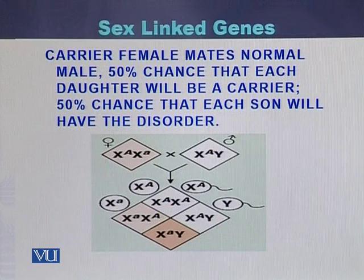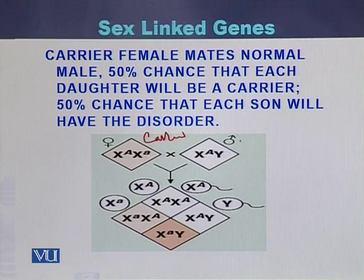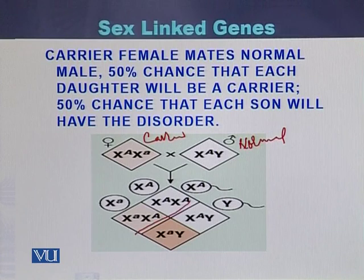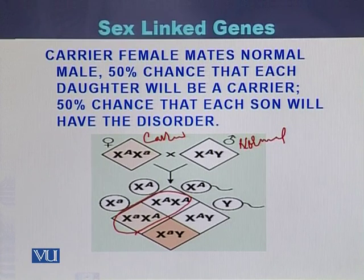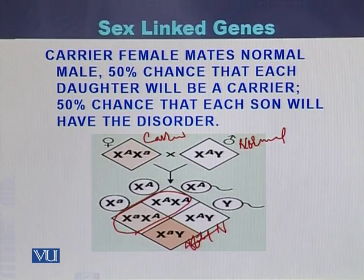In another example, a carrier female mates with a normal male. As a result of this cross, there will be a 50 percent chance that each daughter will be a carrier, and a 50 percent chance that each son will carry the disease. So in a cross where the female is a carrier and the male is normal, 50 percent of daughters will be carriers while 50 percent of sons will be affected.